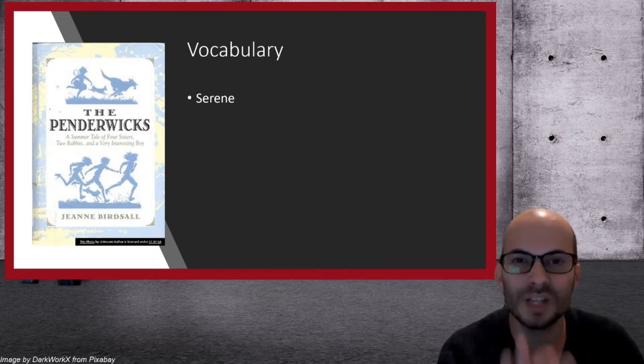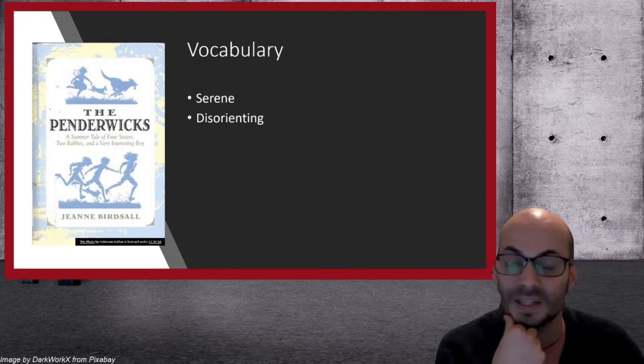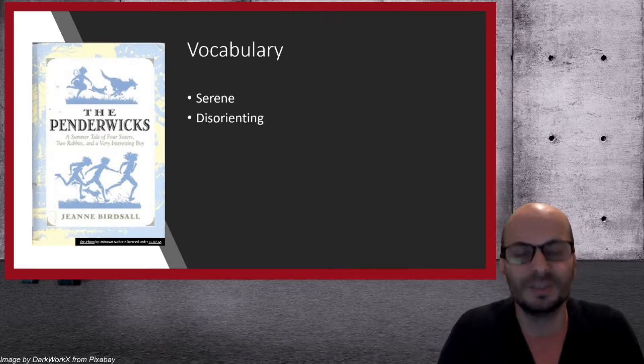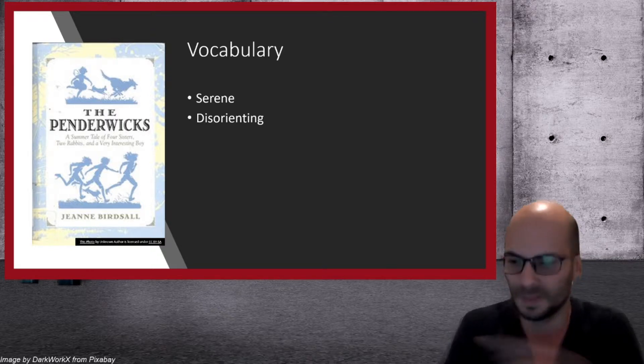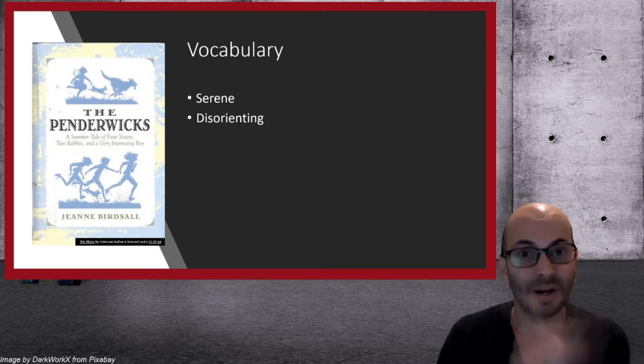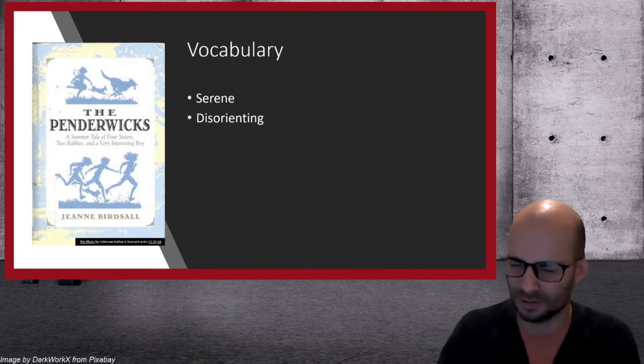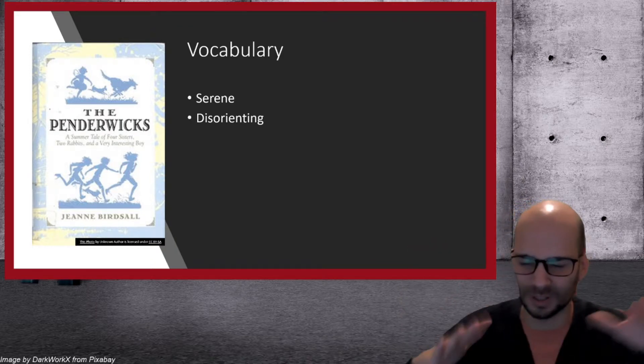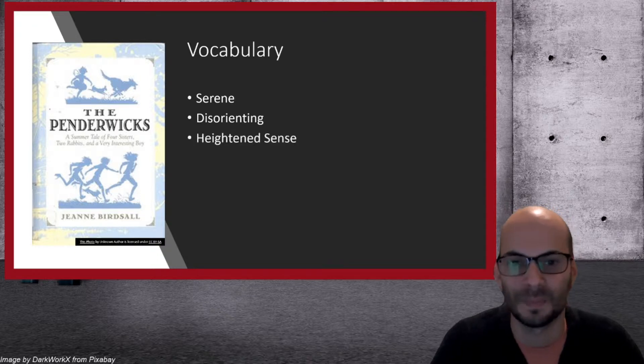Disorienting: this is when you get dizzy or you don't know which way is what way. So when Lydia gets spun around by Alice, she doesn't know where the house was—she's disoriented, she doesn't know which way she's going.